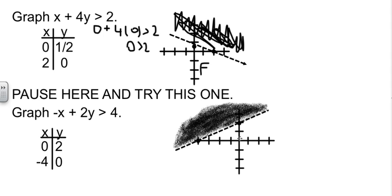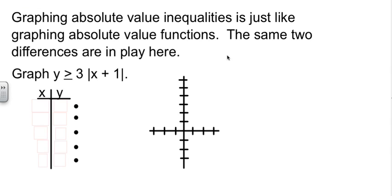So you tried 0, 0, 0 is greater than 4 is false, so this location is false. That means this side of the line is false, so you shade the true side up here.